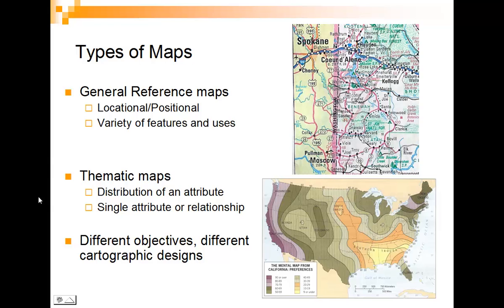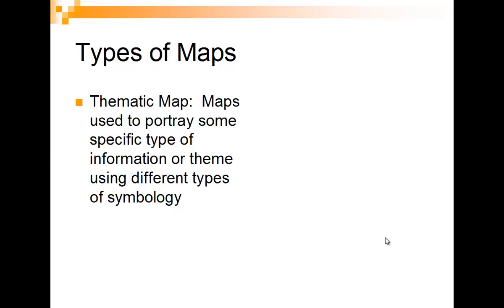On the other side, what we focus on in this class are what we call thematic maps — whether it's the distribution of an attribute or a map with a particular goal we're trying to show, whether it's mental maps or perceptions, a crime map for Durham, or a cancer rate map for North Carolina. Our thematic maps portray specific types of information using different types of symbologies.